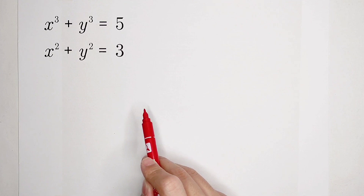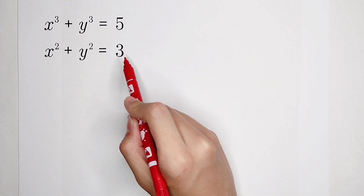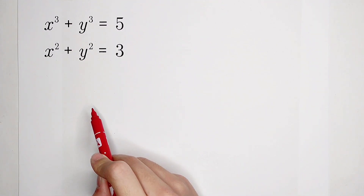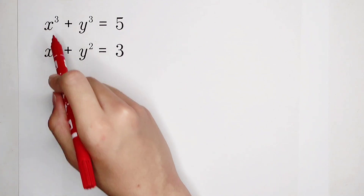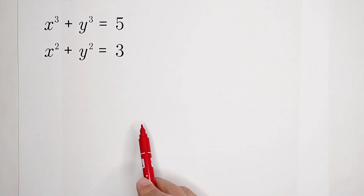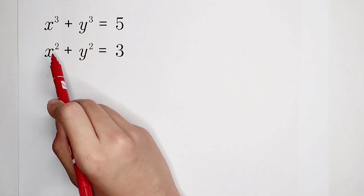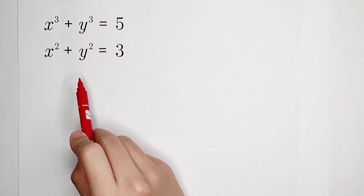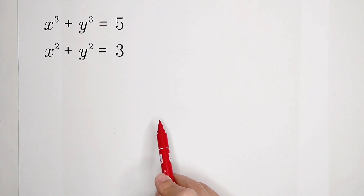By inspection, the right-hand sides are both small numbers, and the exponents on the left-hand side — 3 and 2 — are a little bit large. For this kind of question, our goal is to rewrite x cubed plus y cubed and x squared plus y squared as terms involving x times y and x plus y.